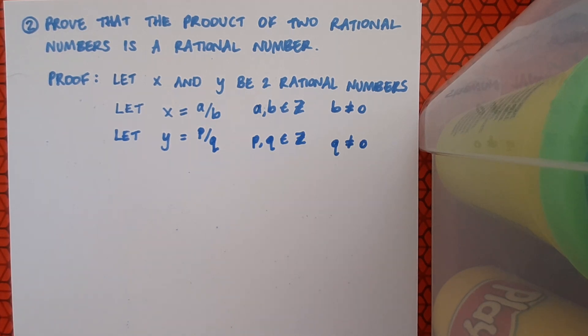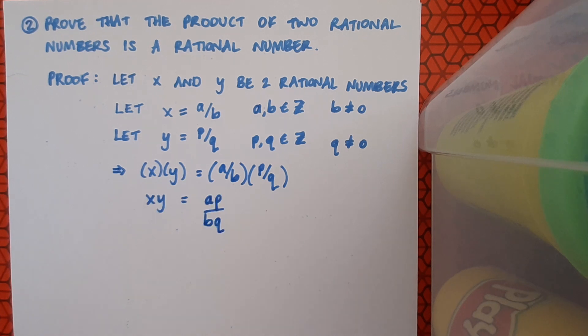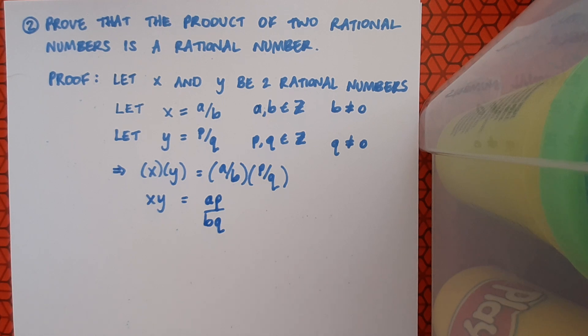Now I'm being asked to prove that the product of these two rational numbers is also a rational number. So I want to get the product of x and y, and I want to use their definitions a over b and p over q to achieve this, and then I want to look at what I get when I multiply them and check and see if it's still rational. So x by y, based on my definitions, is going to be a over b by p over q, and I can tidy this up a little bit as ap over bq.